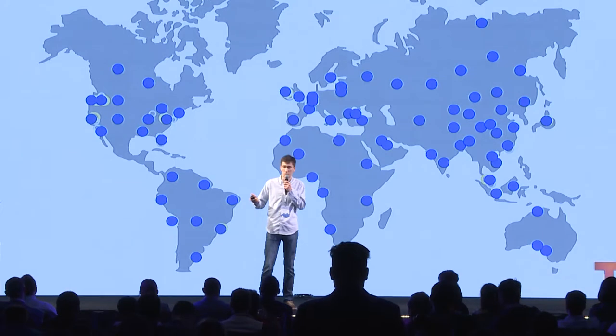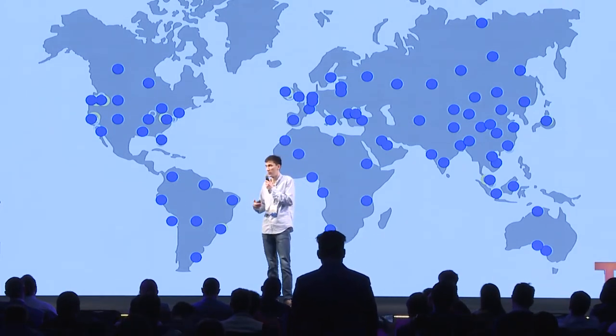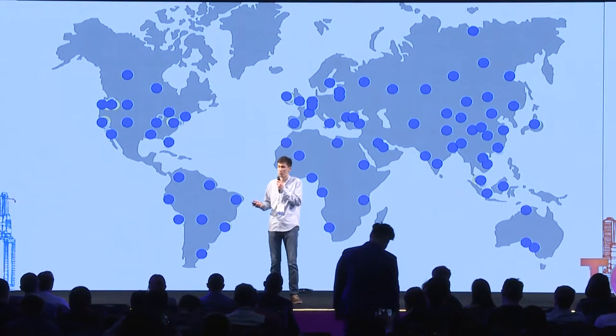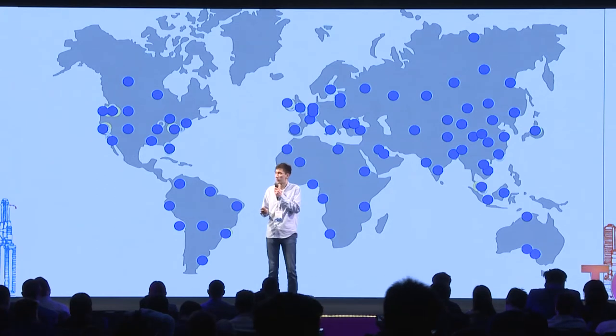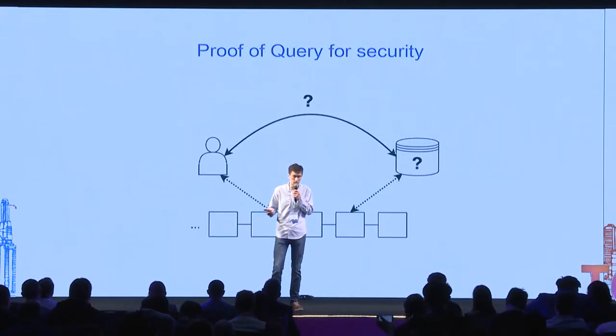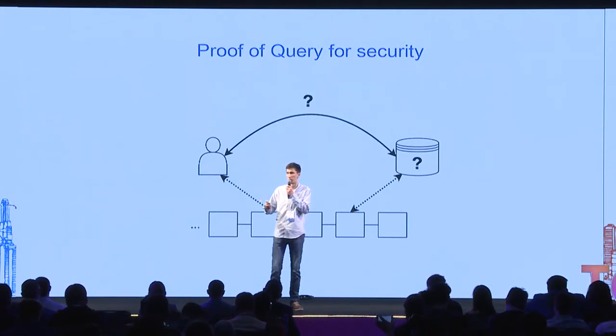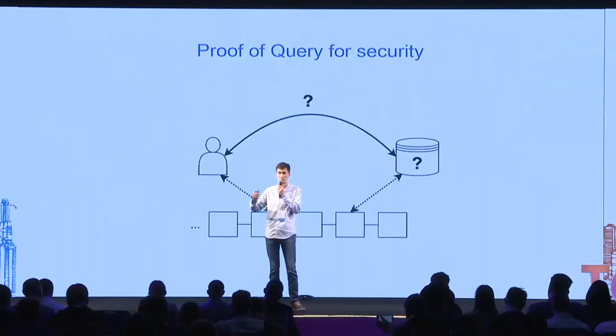If some node goes offline, becomes malicious, or is cut off from the network by any authority, we have other copies of our data on other machines so the data stays online. The next challenge is verifying that our data is there and requests are answered correctly — since we rely on untrusted machines of independent owners. We can keep a hash of the database state on the blockchain without putting all the data on-chain. This hash allows a client to verify that the result received from the network is correct.